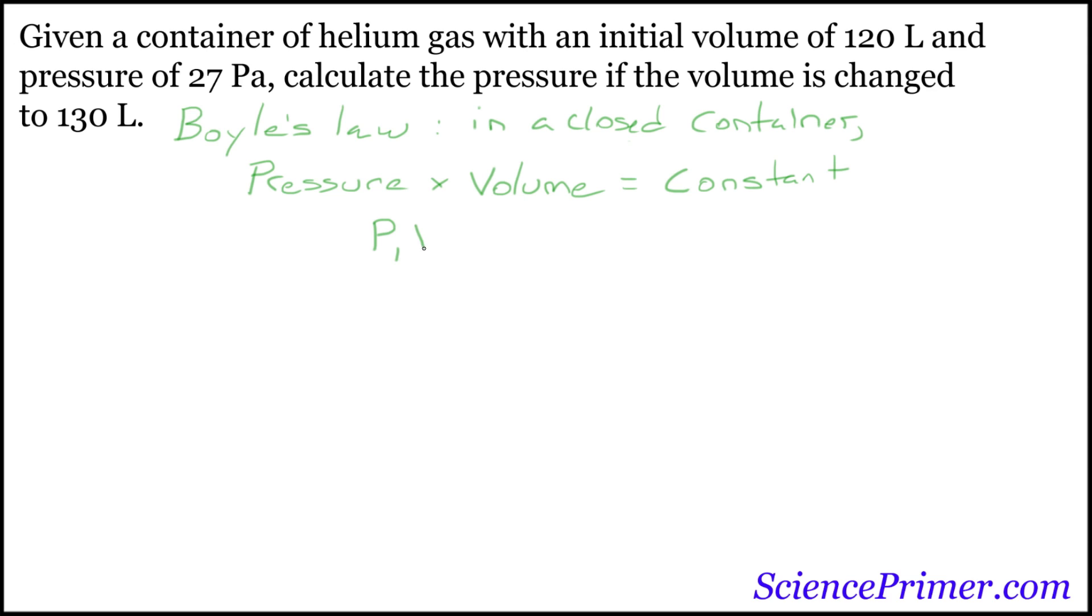at a given pressure, a closed container will have a given volume, and if pressure changes to p2, another pressure, volume 2 will also adjust so that the product of p1 times v1 equals the product of the new pressure times a new volume. And this is the formulation of the equation that we need to solve this question.